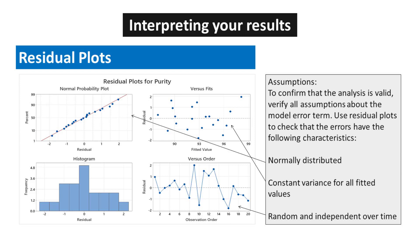Based on the normal probability plot, you can assume that the residuals for the data do not deviate substantially from a normal distribution. Use the histogram of residuals to determine whether the data are skewed or whether outliers exist in the data. Use the residuals versus fits plot to verify the assumption that the residuals have a constant variance. The plot of the residuals versus order displays the residuals are random and independent over time.